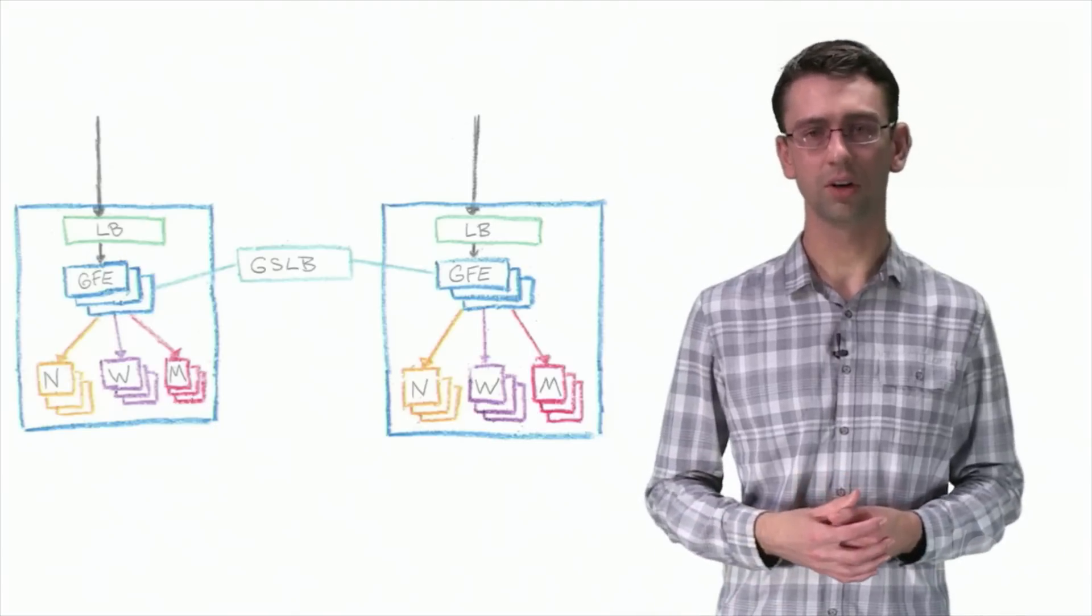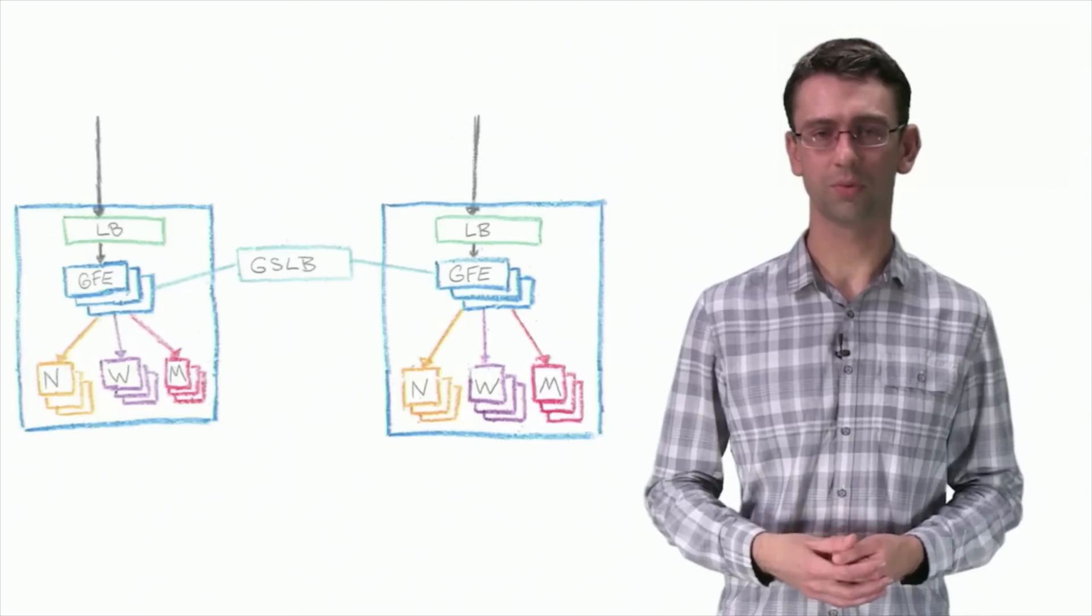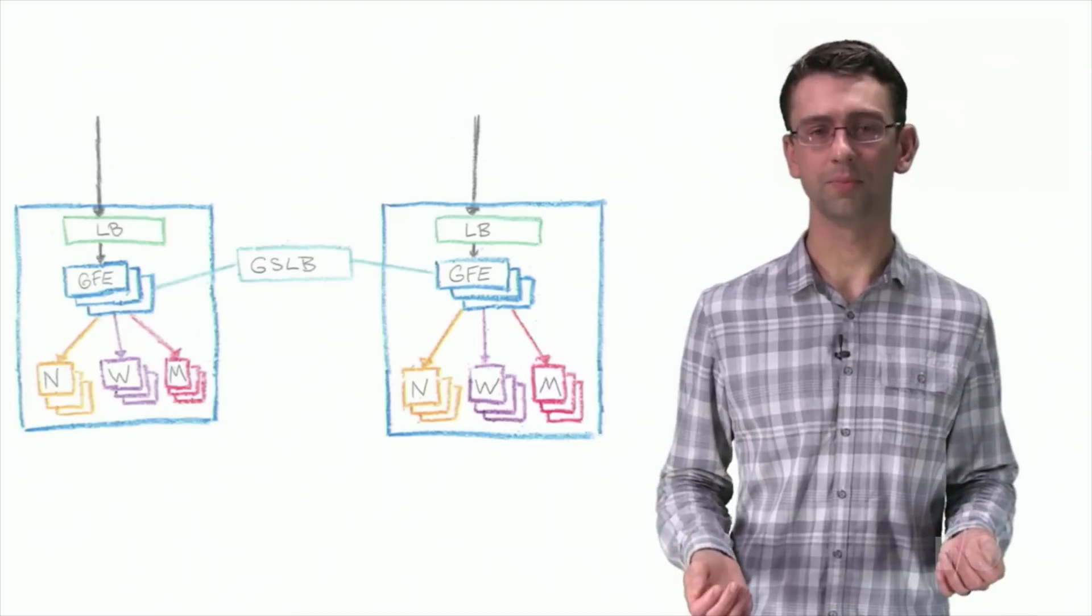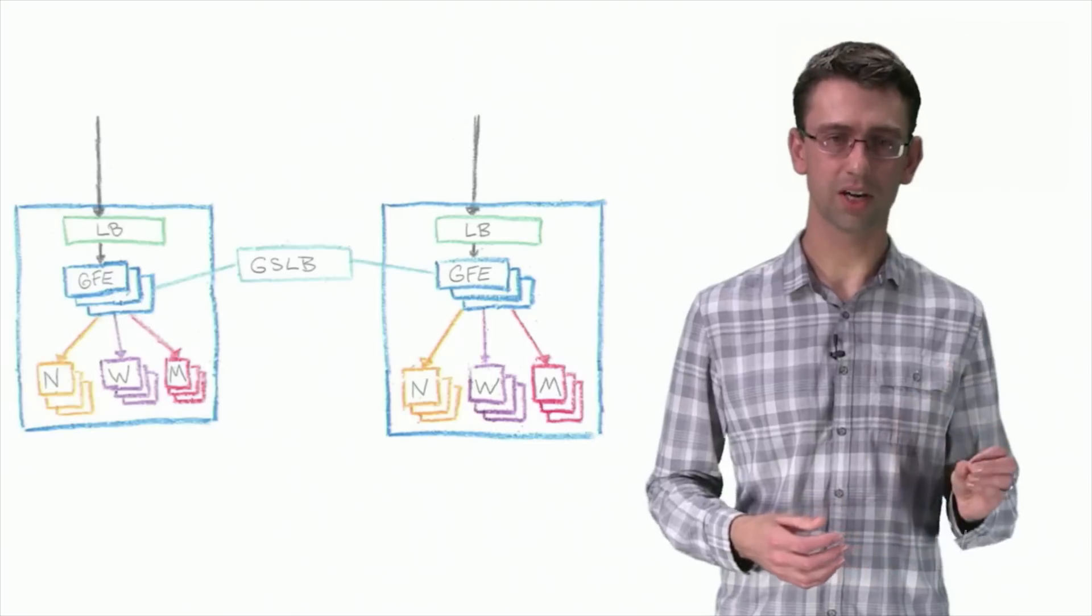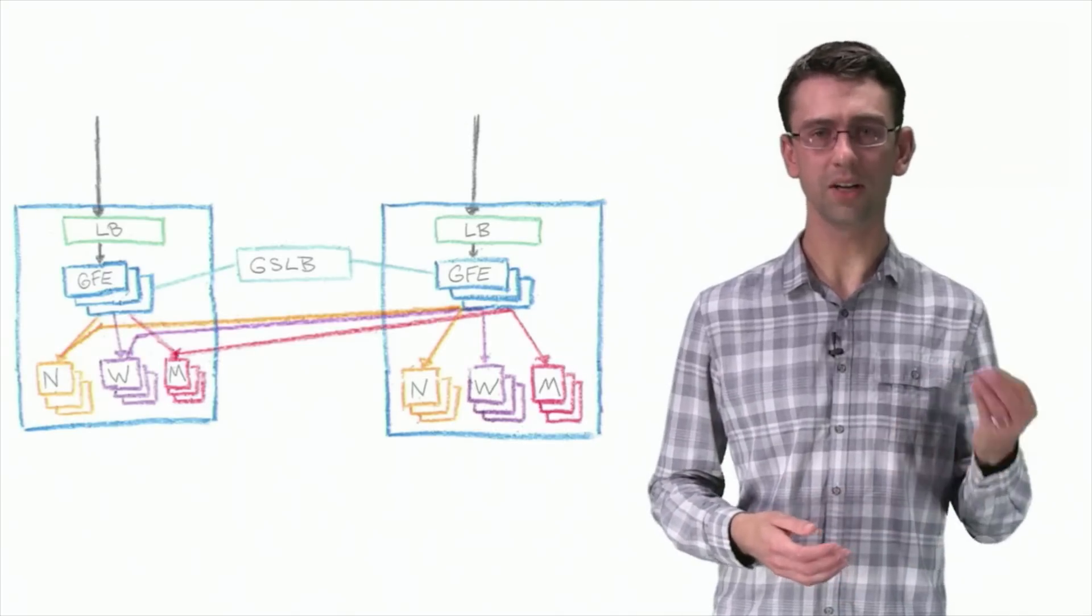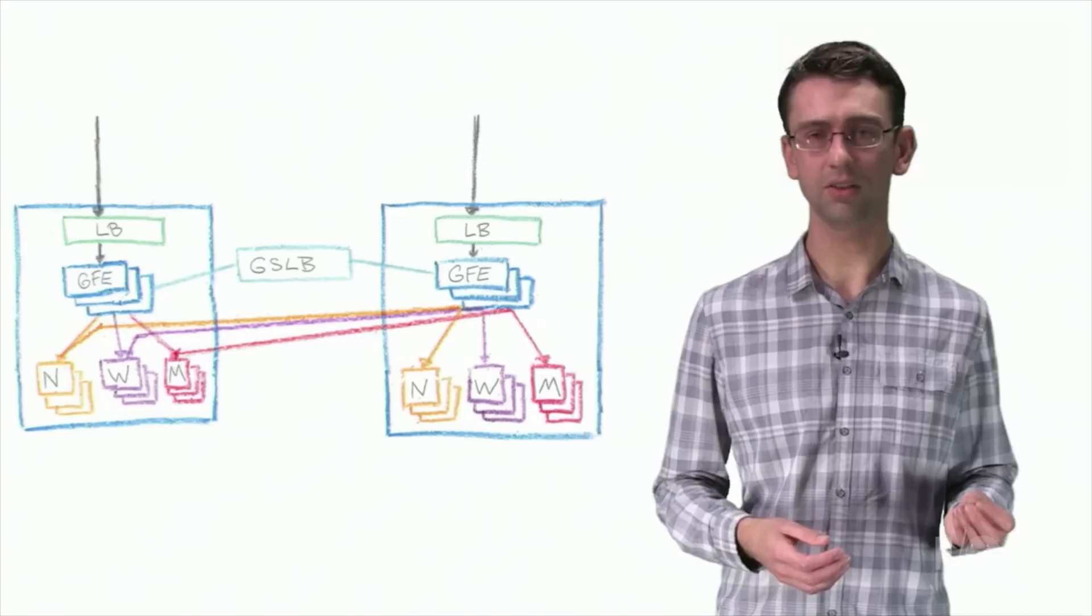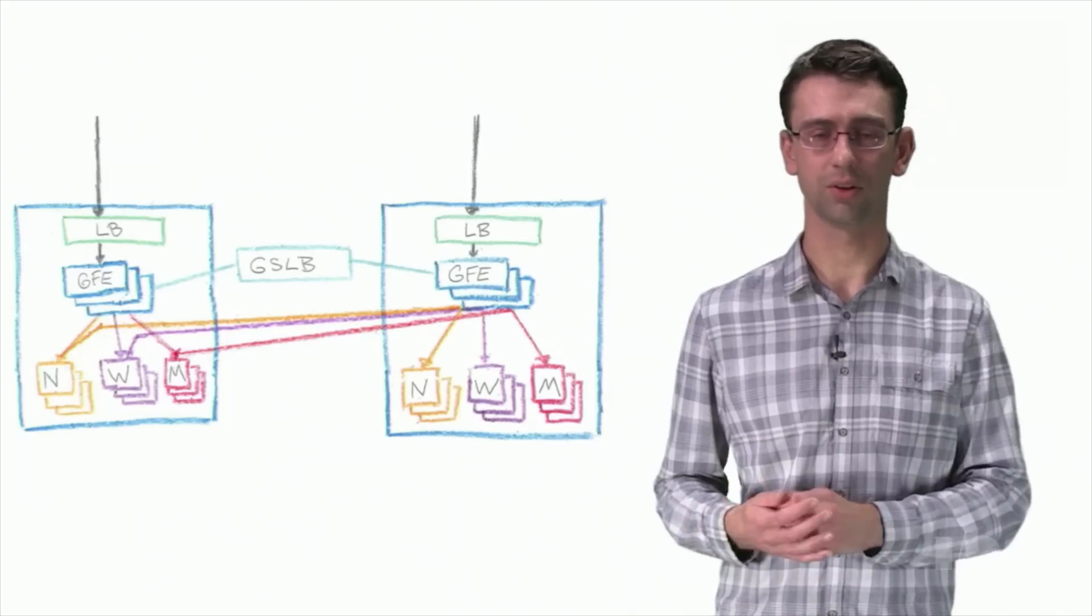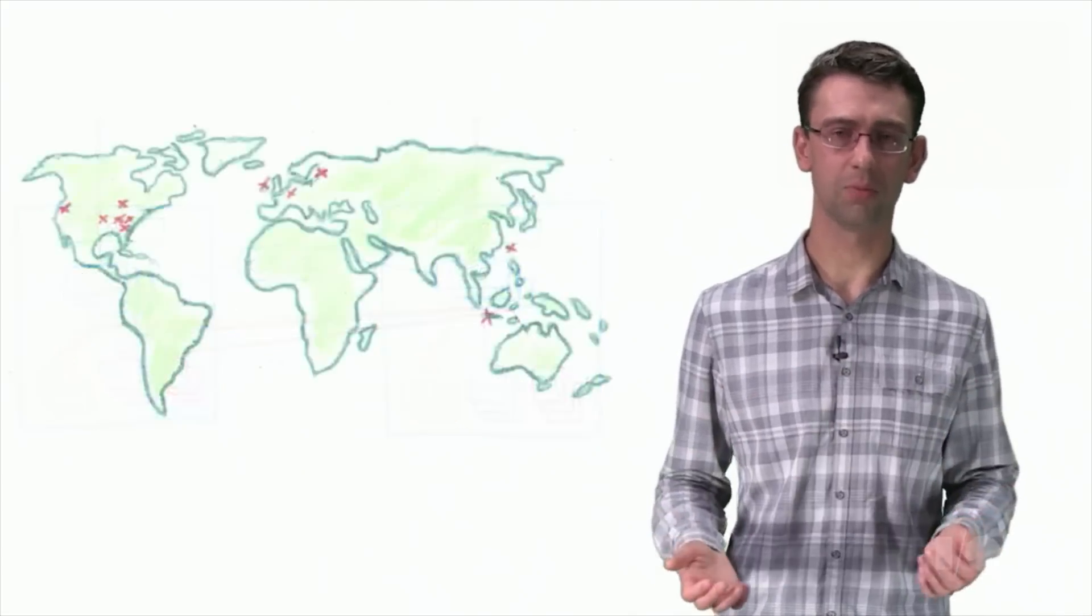To support this, we introduced another load balancing system called the Global Software Load Balancer, or GSLB. This system allows us to set per data center capacities for each back-end service. When the rate of incoming requests for a service exceeds the local capacity, requests overflow to the next closest location, and we call this back-end load balancing.